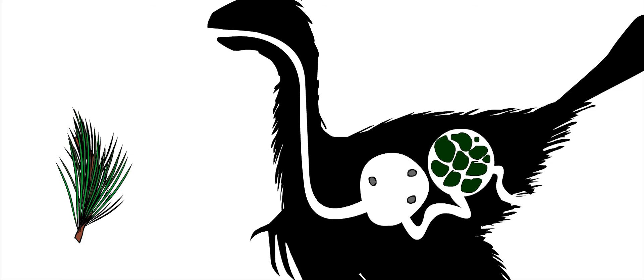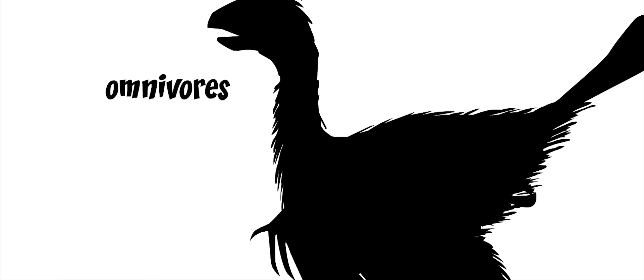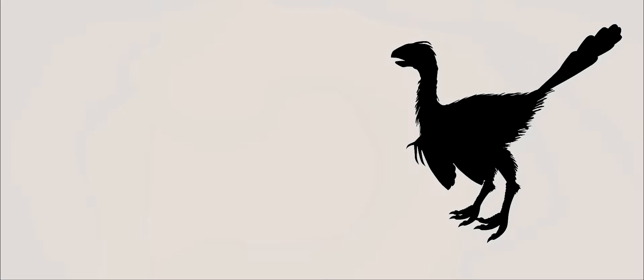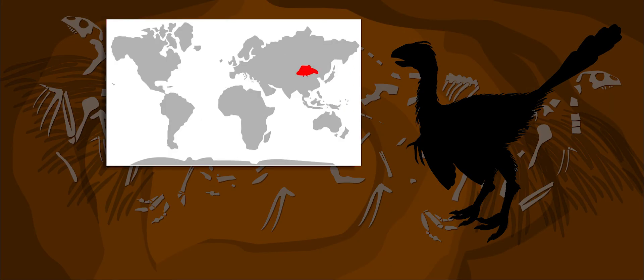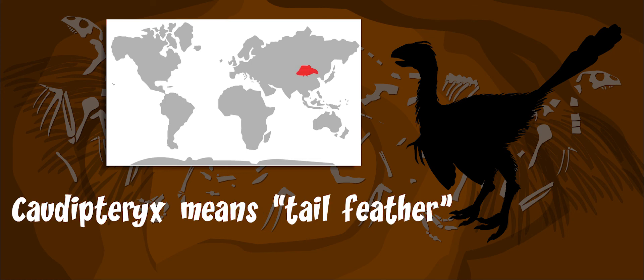Creatures that eat both meat and plants are called omnivores. Caudipteryx was a very unusual dinosaur. Its fossils were found in northeastern China. Caudipteryx means tail feather.